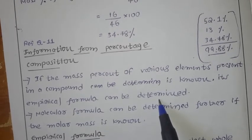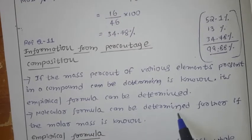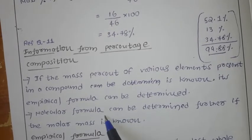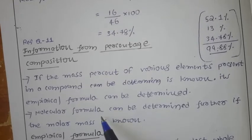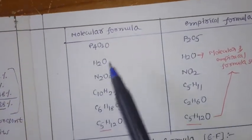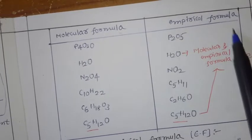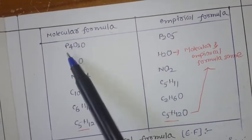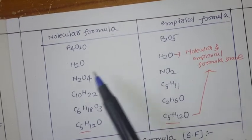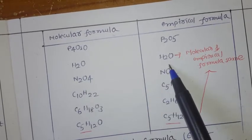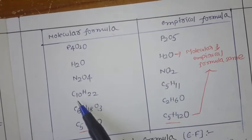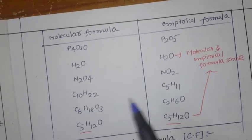Let us discuss what is empirical formula and what is molecular formula. Before going to the exact definitions, let us look at an example. We have a table — one column shows the molecular formula and the other column shows the empirical formula. For example, the molecular formula P₄O₁₀ has the empirical formula P₂O₅. For H₂O, the molecular formula and empirical formula are the same. For N₂O₄, the empirical formula is NO₂. For C₁₀H₂₂, the empirical formula is C₅H₁₁.